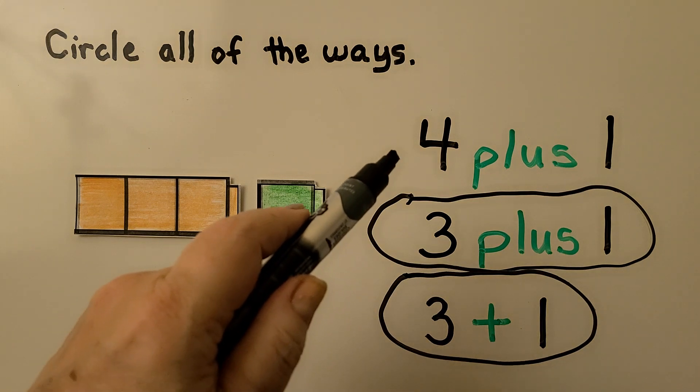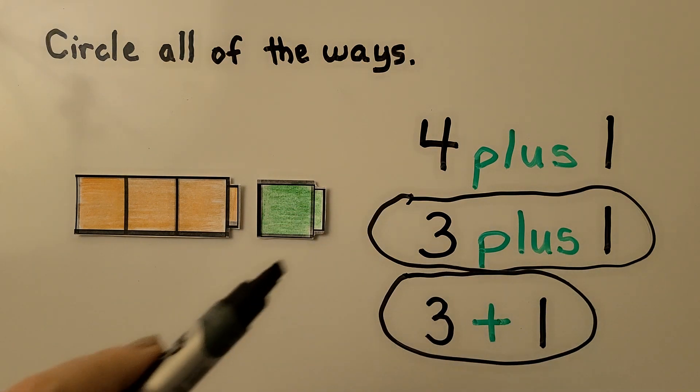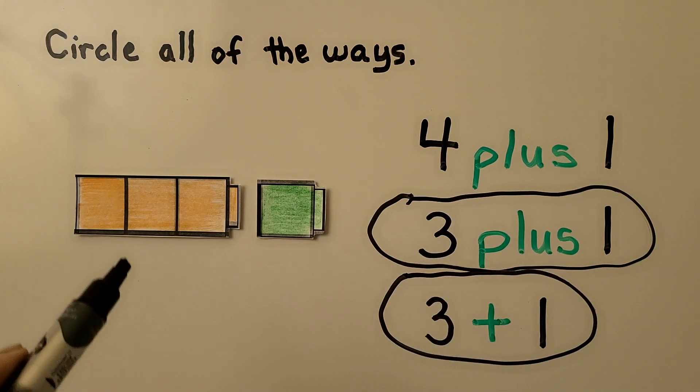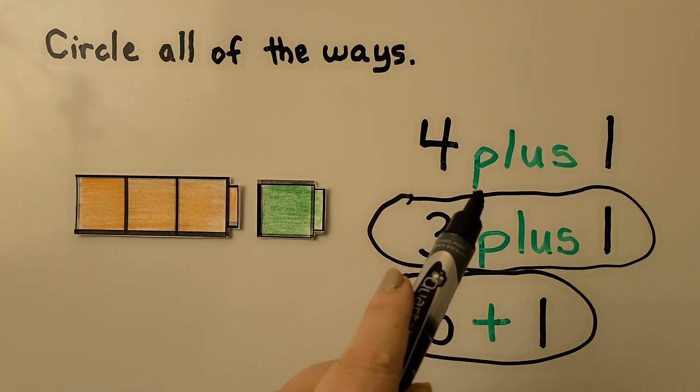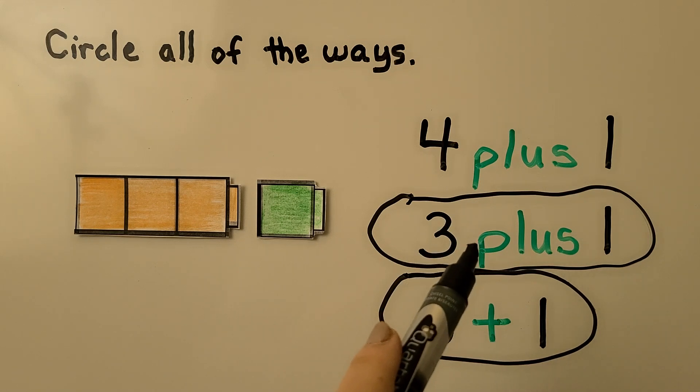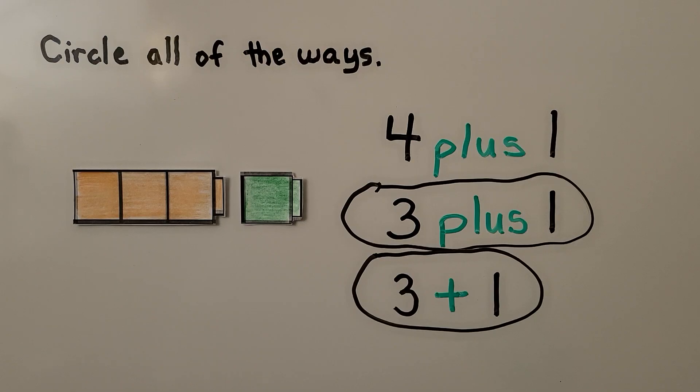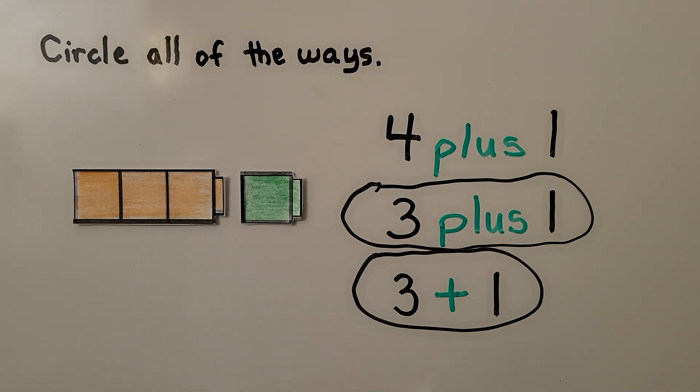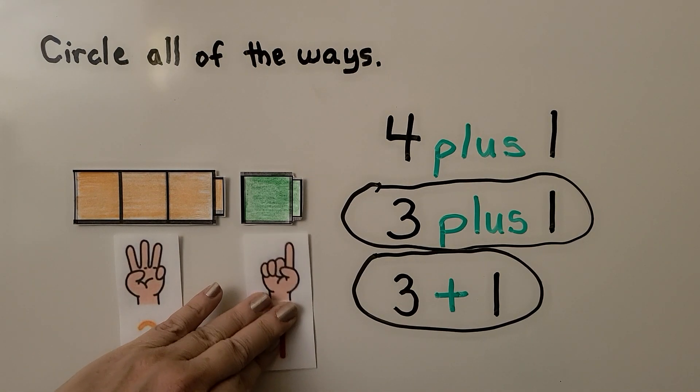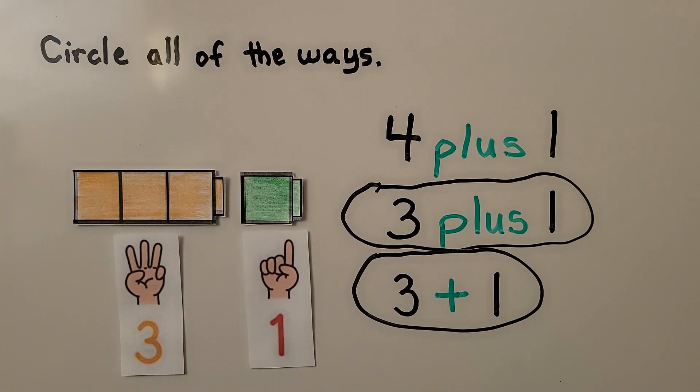This one wouldn't be correct because it's not four plus one. It's three plus one more. So remember this word starts with a puh. Plus. And this is the plus symbol that we use in addition sentences. For these cubes, we have three and one more. Three plus one.